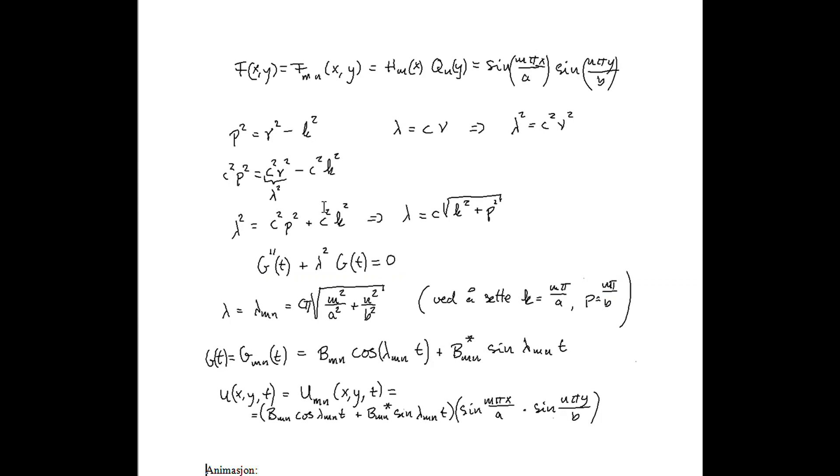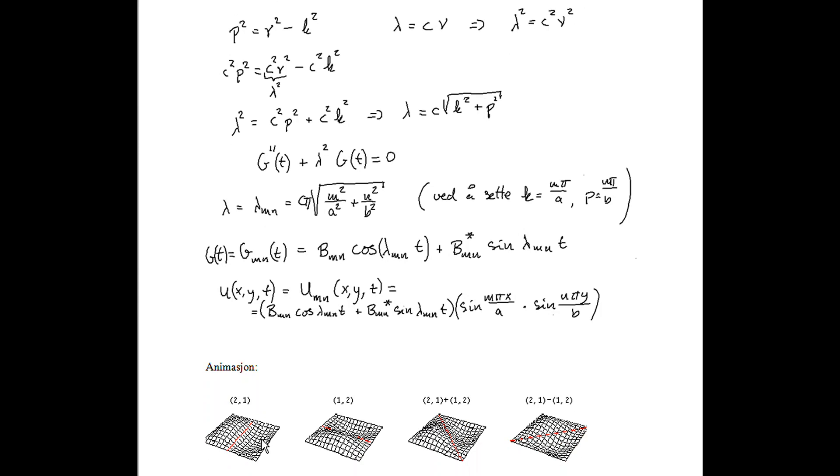If we put lambda, lambda m, n, where m and n are integer values, equal to this expression, c pi times the square root of this sum. And putting, now we see the solution of this problem.